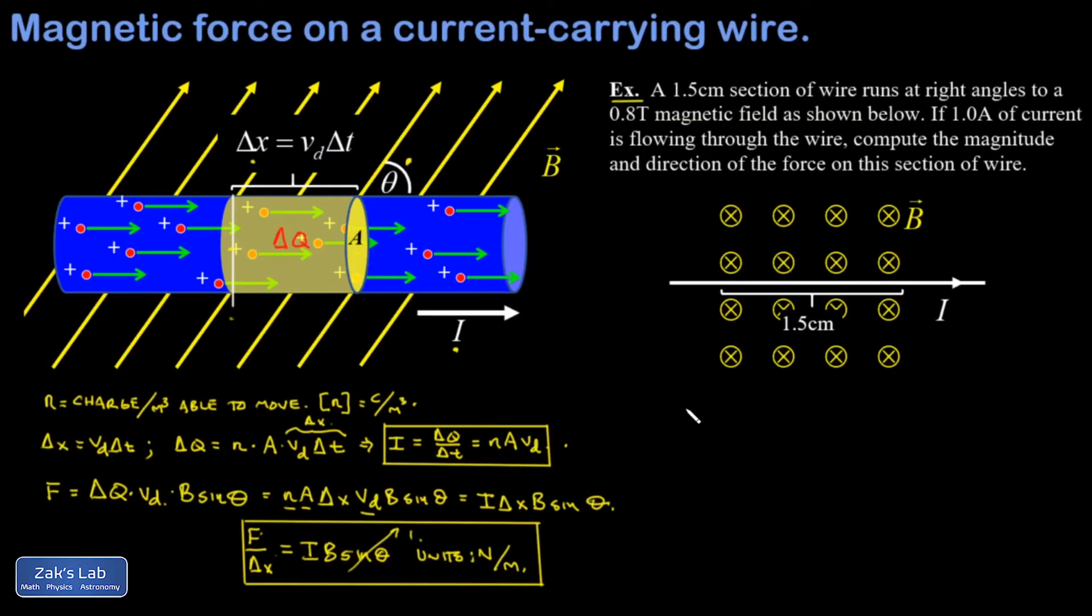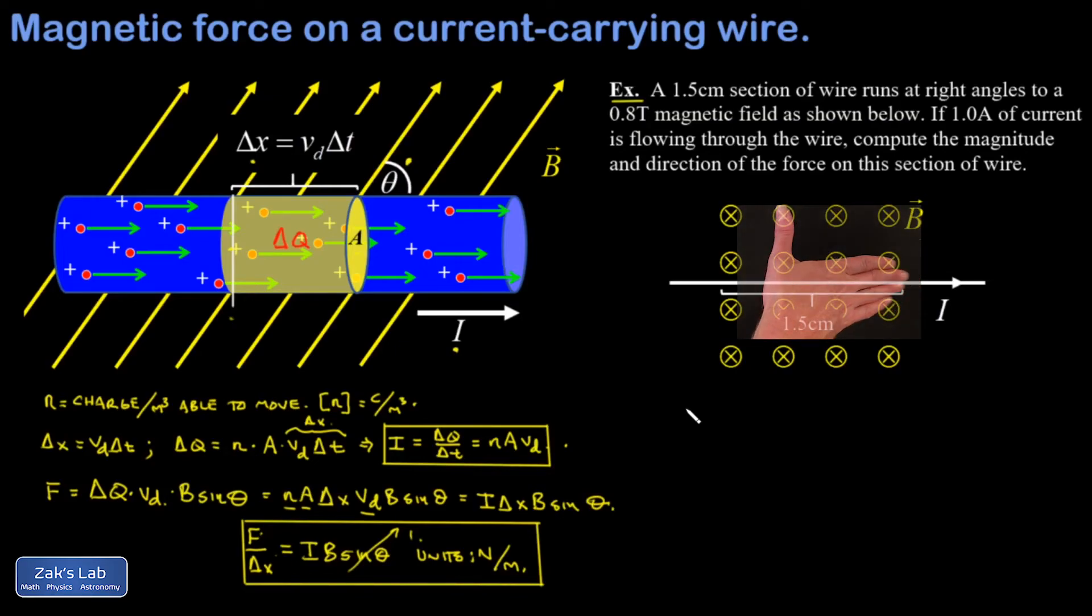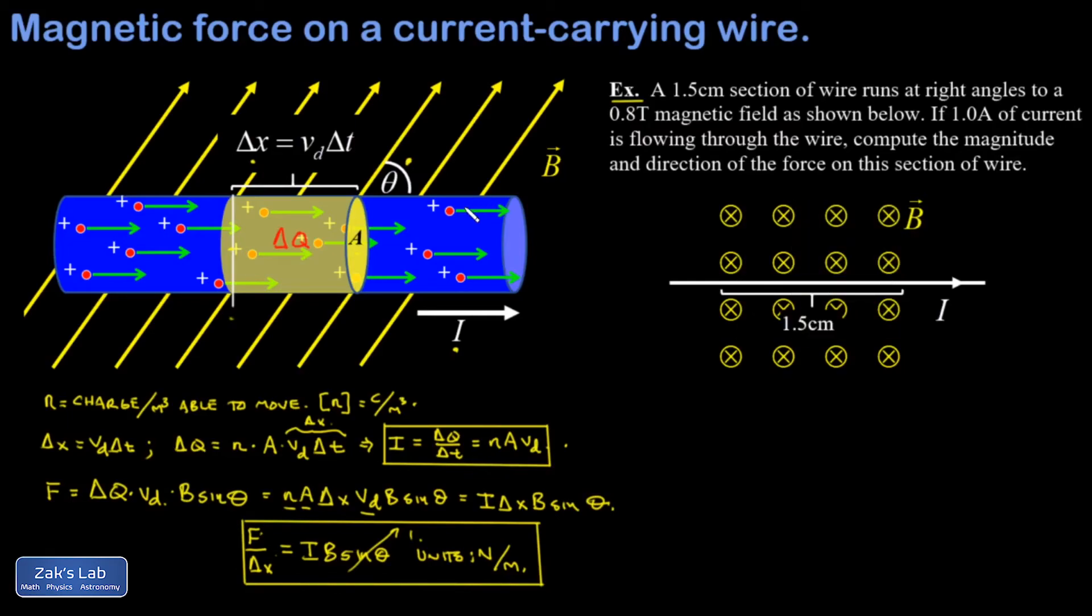So let's just deal with the direction first. If I put my fingers in the direction of the current and sweep out to the direction of the magnetic field, I'm going to get an upward force. So we've got the direction. I'll call that F_B for magnetic.